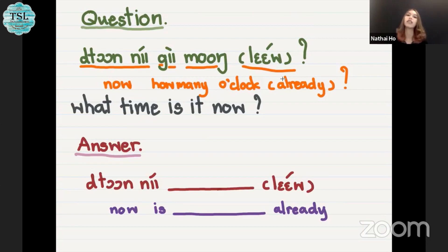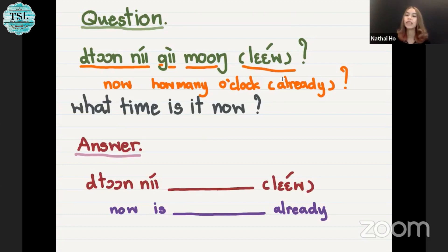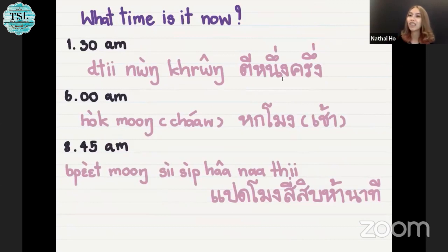And the answer — when we want to answer this question, the pattern is: say ตอนนี้ followed by the time, and you can also add แล้ว at the end. For example, if it is midday, we say ตอนนี้เที่ยงวันแล้ว or ตอนนี้เที่ยงแล้ว.